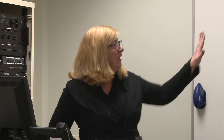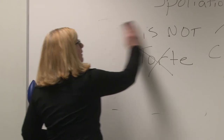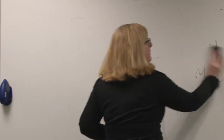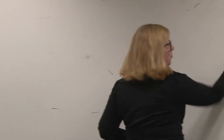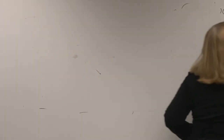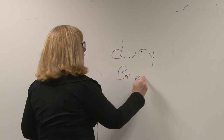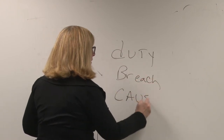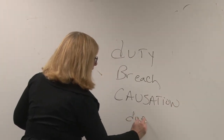Having completed an overview of intentional torts, we move on to negligence. Negligence is a step above a classic accident and has a less strict standard than intentional torts. Negligence has four elements: duty, breach, causation, and damages.